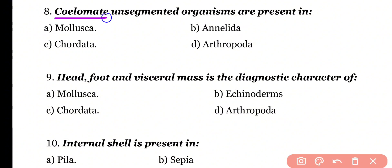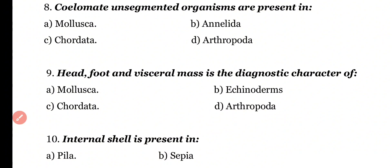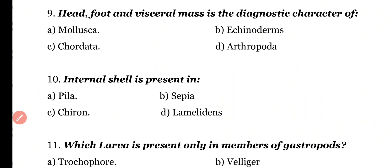Question number 8: In which phylum are coelomate and unsegmented organisms present? Options: Mollusca, Annelida, Chordata, Arthropoda. Correct answer is option A. Coelomate and unsegmented organisms are present in Mollusca; organisms in Chordata, Annelida, and Arthropoda are segmented.